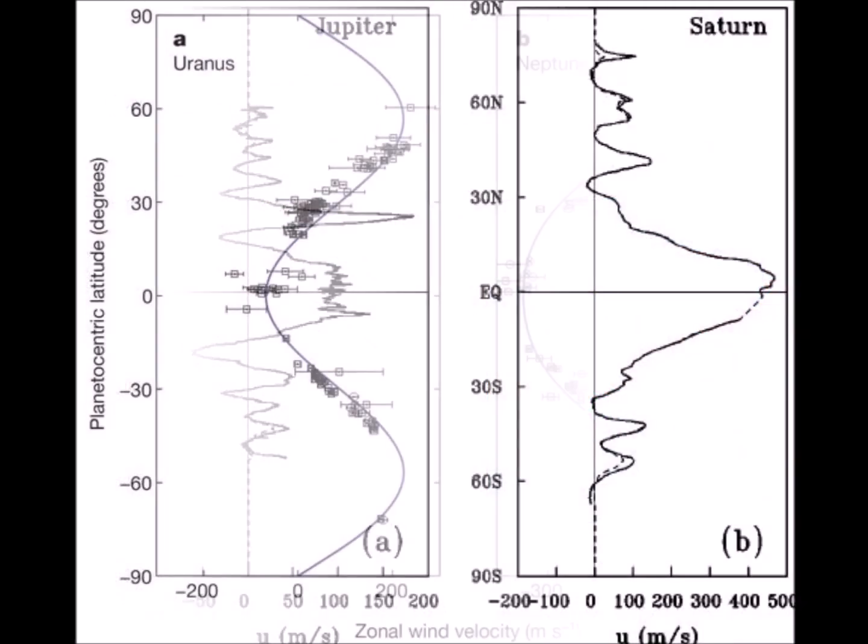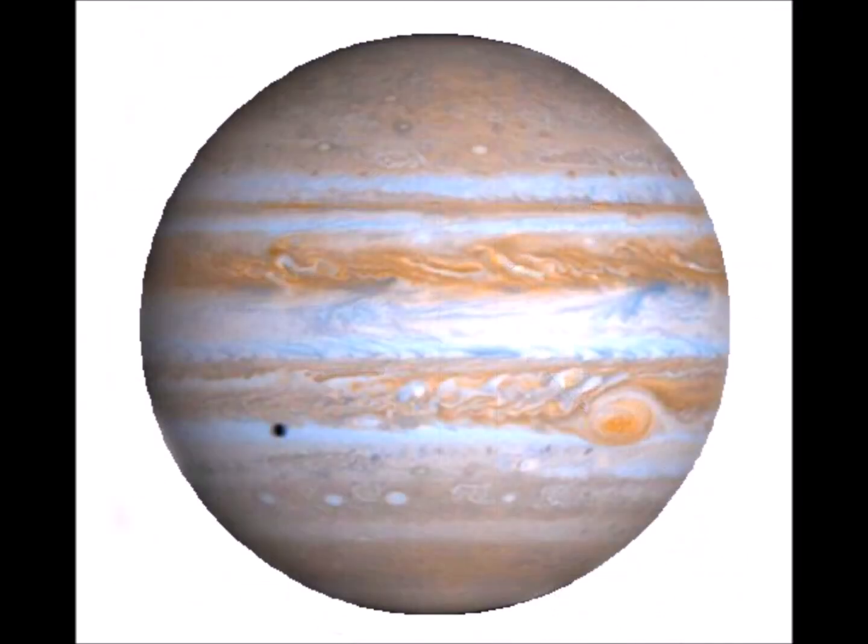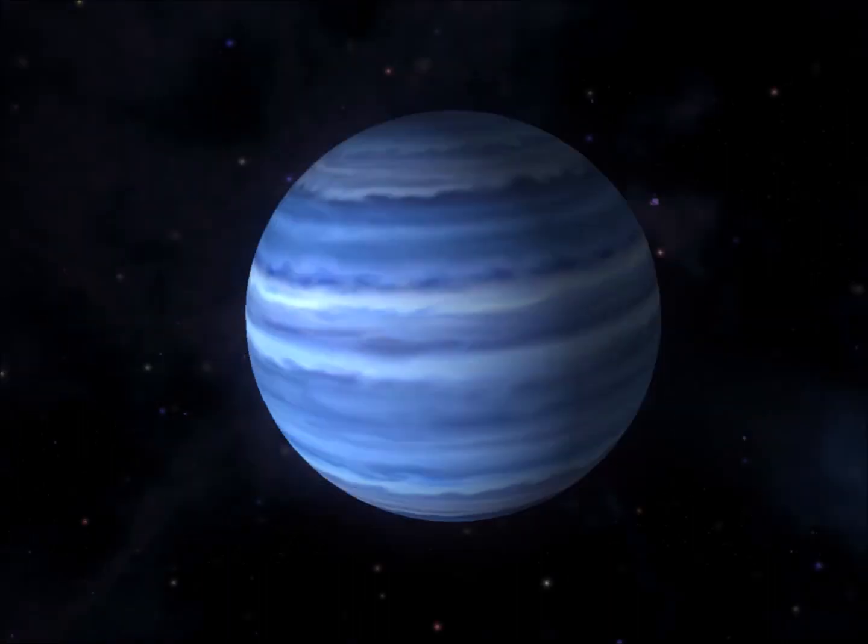The ether causes the gases surrounding the planets to rotate. This is the case for Jupiter, Saturn, Uranus, and Neptune.